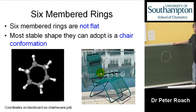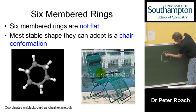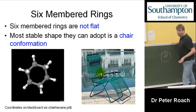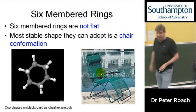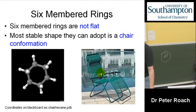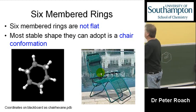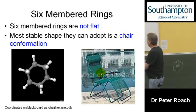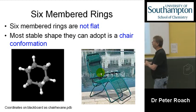Originally, I drew a six-membered ring as being flat, with that angle as 120 degrees. In fact, a six-membered ring is not flat — it adopts a chair conformation.